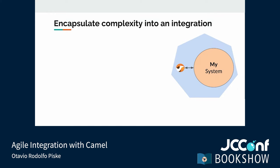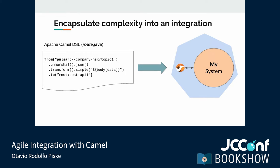Routes are a fundamental part of Camel. They are the building blocks that allow us to encapsulate the complexity of an integration — we use them to describe routing logic between different endpoints, error handling strategy, data transformation, and mediation rules. On Camel, routes and integration patterns are described using a DSL. Supported DSLs include Java, YAML, and Spring-XML, among others.